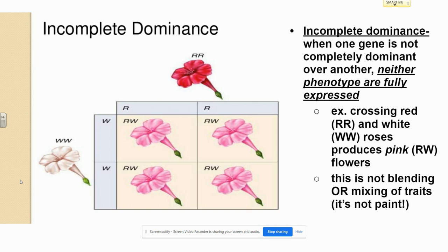First up, incomplete dominance. Notice that unlike Mendelian complete dominance examples, the genotypes are represented by two different letters and both are capital letters. In this example, capital R represents pure red and capital W represents pure white. Both represent alleles of the gene for petal color. When the plant is homozygous for either color, it is expressed as pure red or pure white.